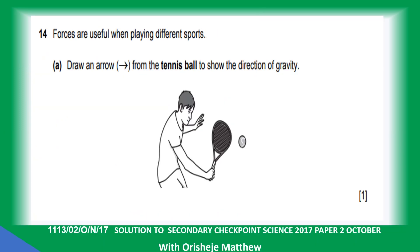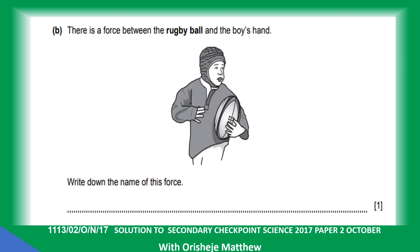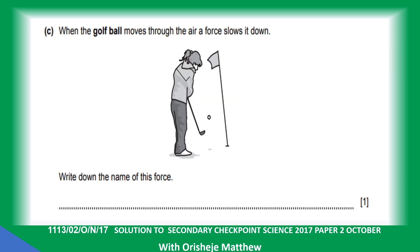Question 14. Forces are useful when playing different sports. Draw an arrow from the tennis ball to show the direction of gravity — gravity always acts downward, towards the centre of the Earth. There is a force between the rubber ball and the boy's hand — the name of this force is friction. When the golf ball moves through air, a force slows it down: air resistance, friction, or drag force — any of them is correct.